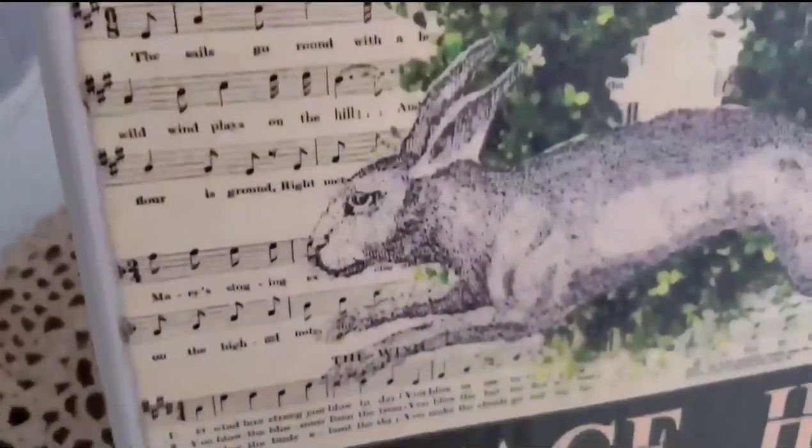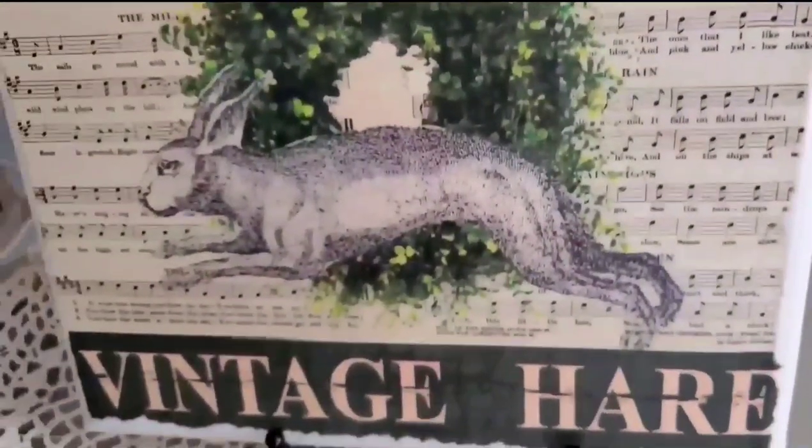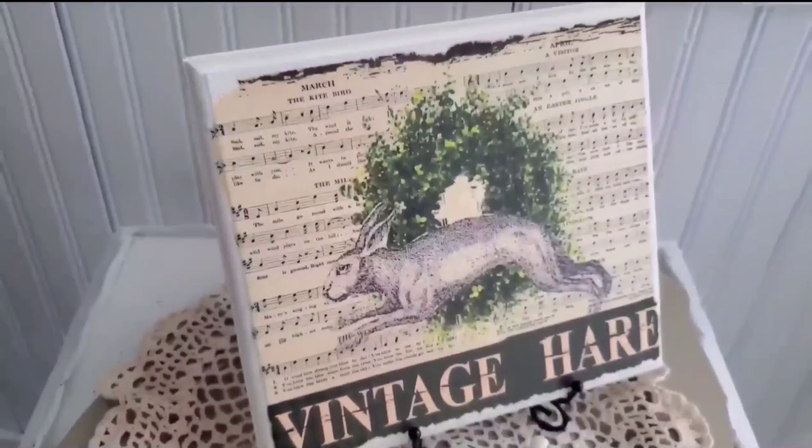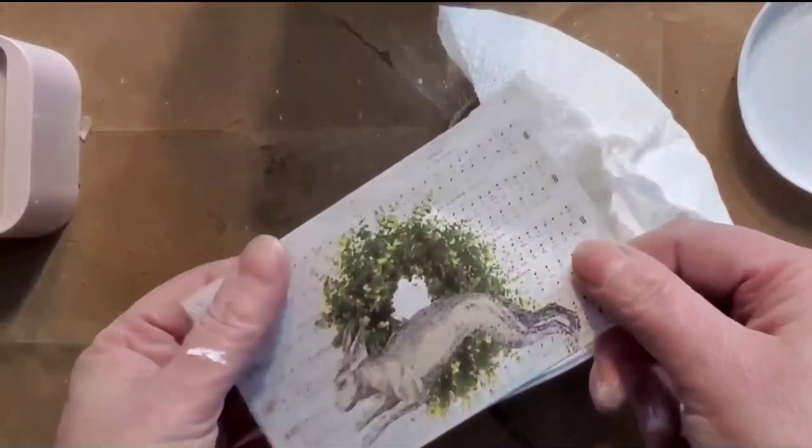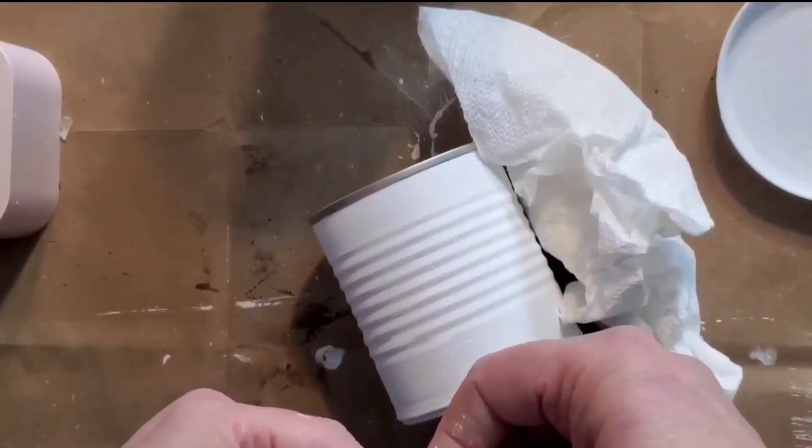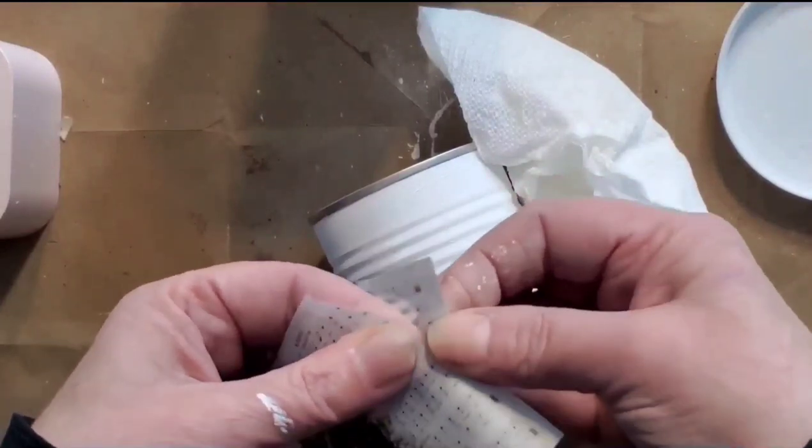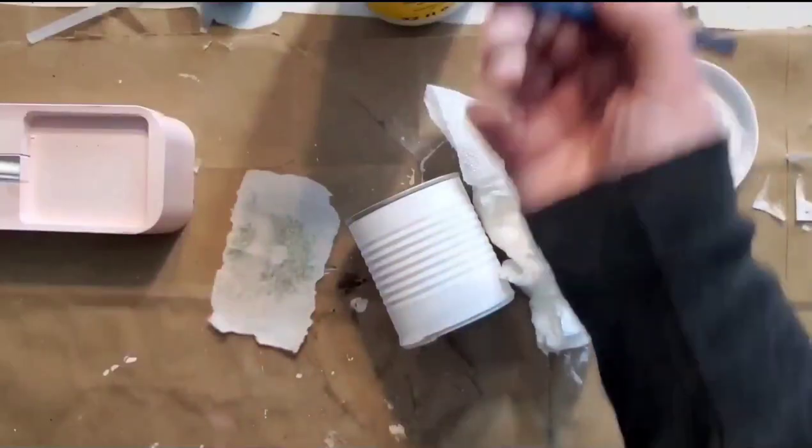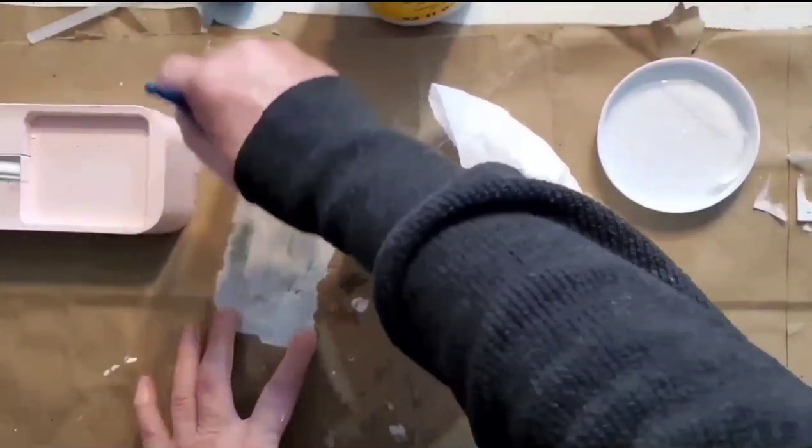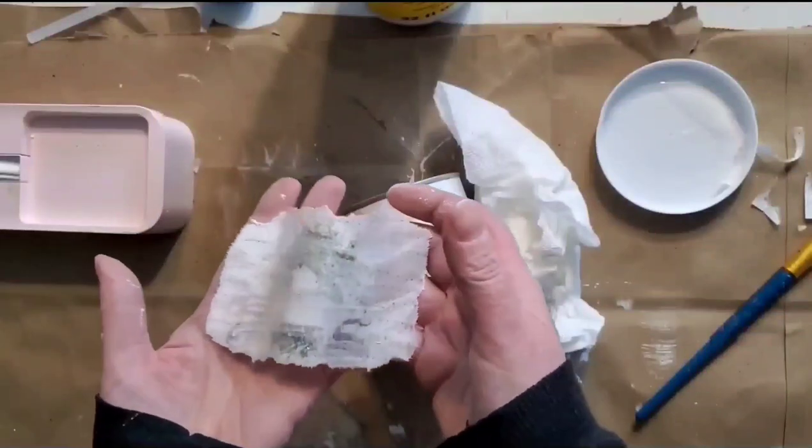For our next project, we're going to be adding this graphic onto an empty tin can. I did apply two coats of white chalk paint from Waverly. Once the paint is dry on your can, or you can even choose not to paint your can, this is a two-minute project. This would be so cute with all different size tin cans on a table arrangement with flowers.